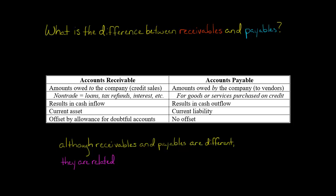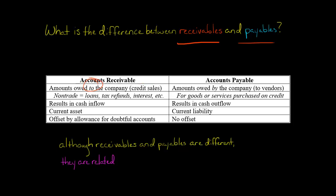Some people get confused between accounts receivable and accounts payable. Accounts receivable represent amounts of money that are owed to the company, typically stemming from credit sales, which are called trade receivables.